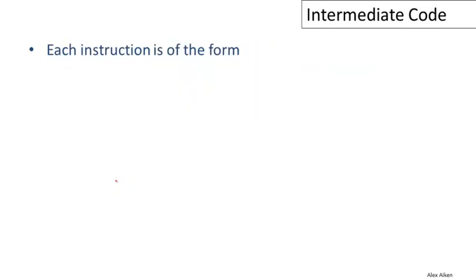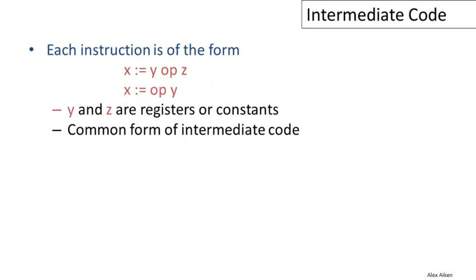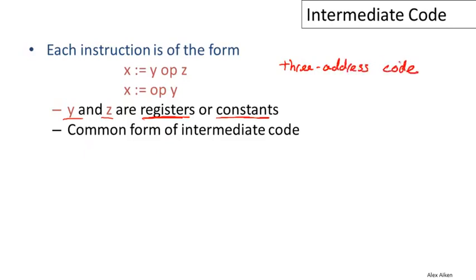In the intermediate code we'll be looking at, every instruction will have one of two forms: it will either be a binary operation or a unary operation. The arguments on the right-hand side — Y and Z — will be either registers or constants; they could also be immediate values. This is a very common form of intermediate code, so widely used it actually has a name: it's called three-address code, because every instruction has at most three addresses — at most two arguments and then a destination.